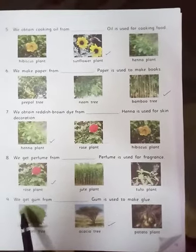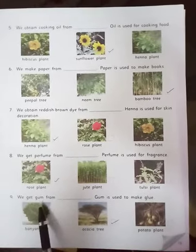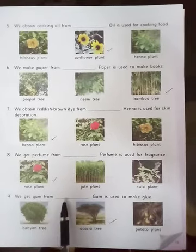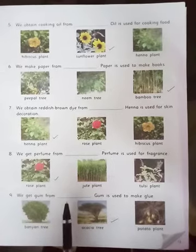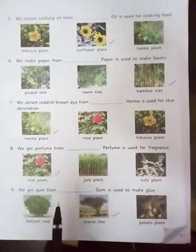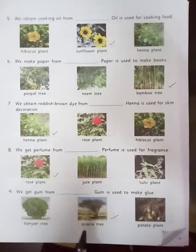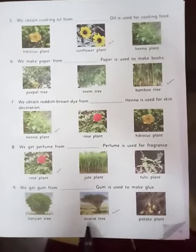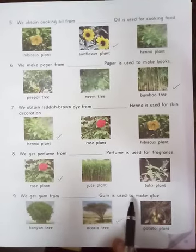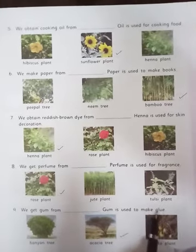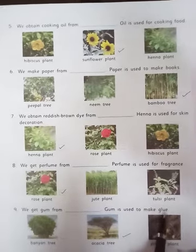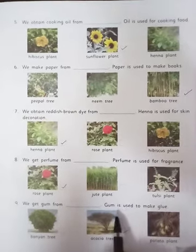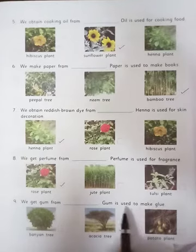We get gum from — ? The correct answer is Acacia tree. Gum is used to make glue.